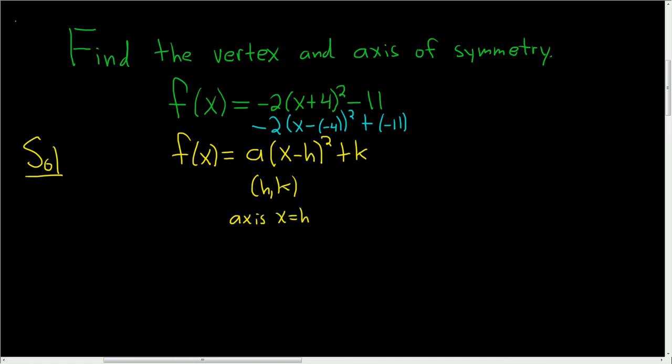So in our problem, h is negative 4, so the vertex will be negative 4, and k is negative 11.